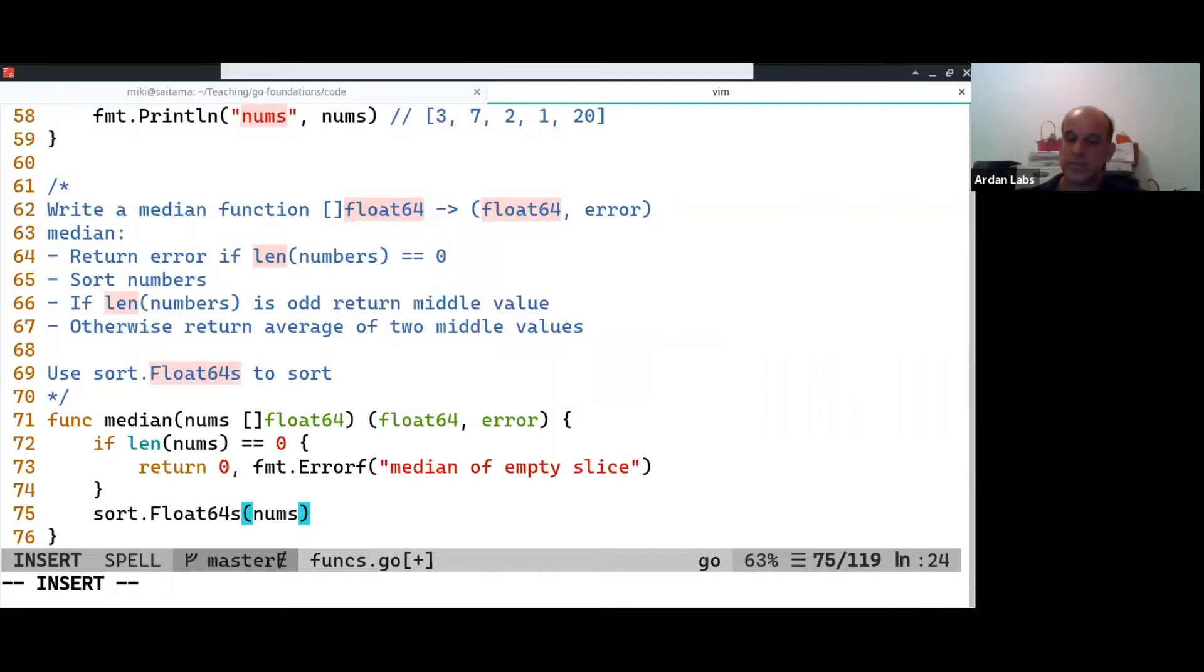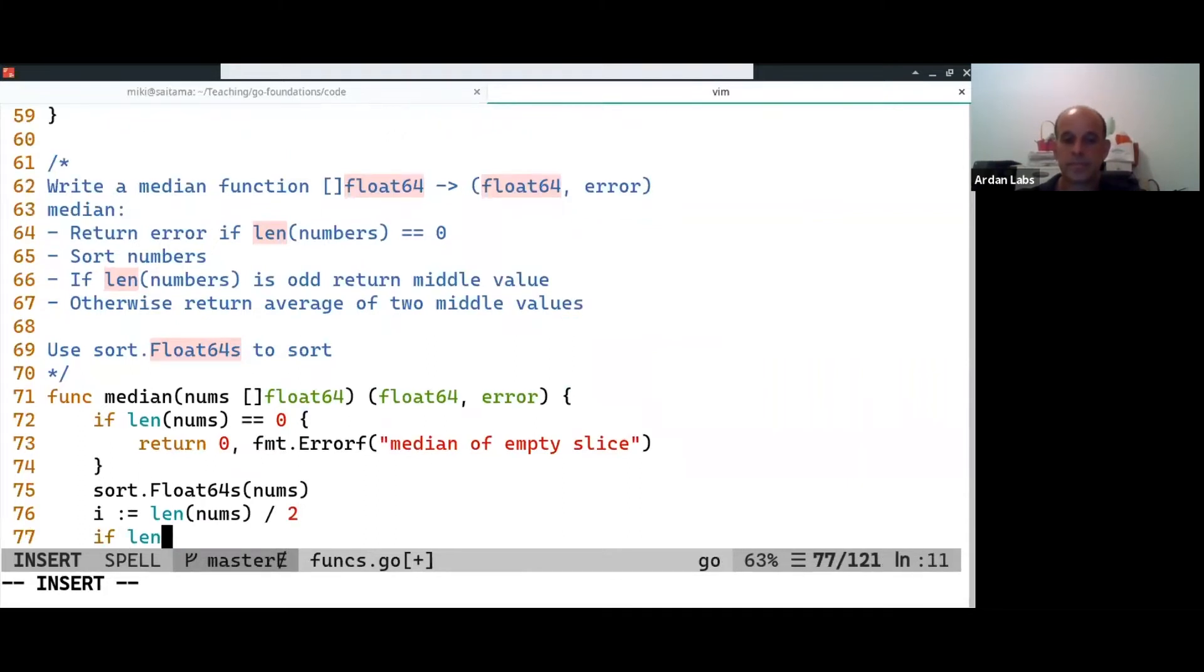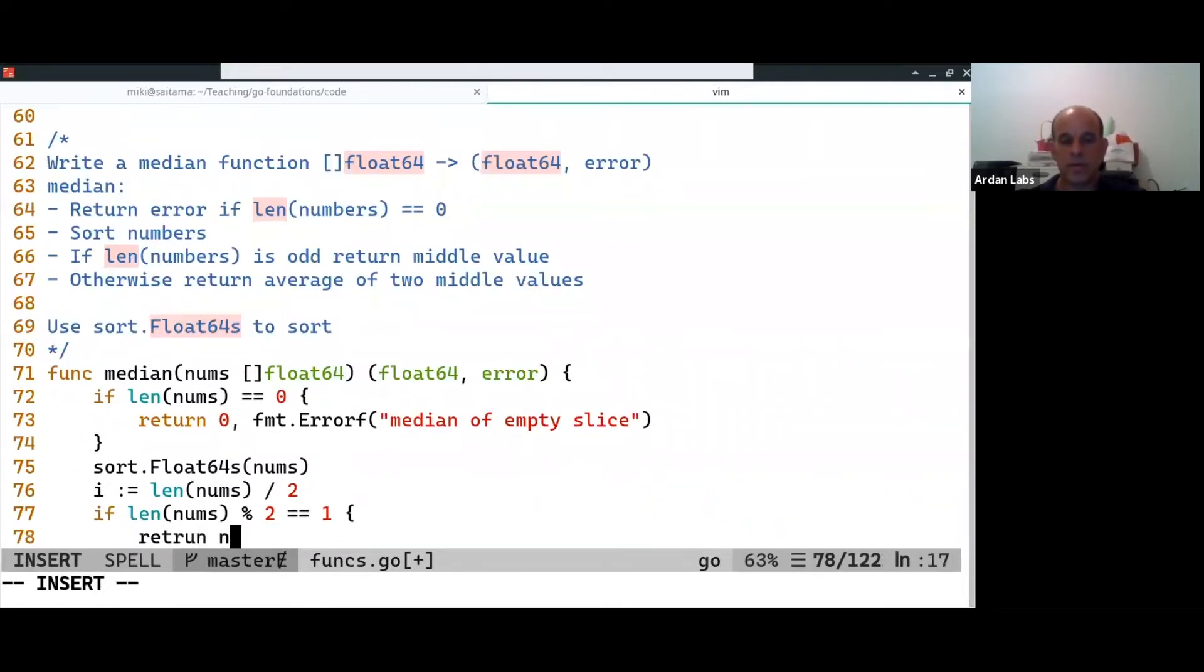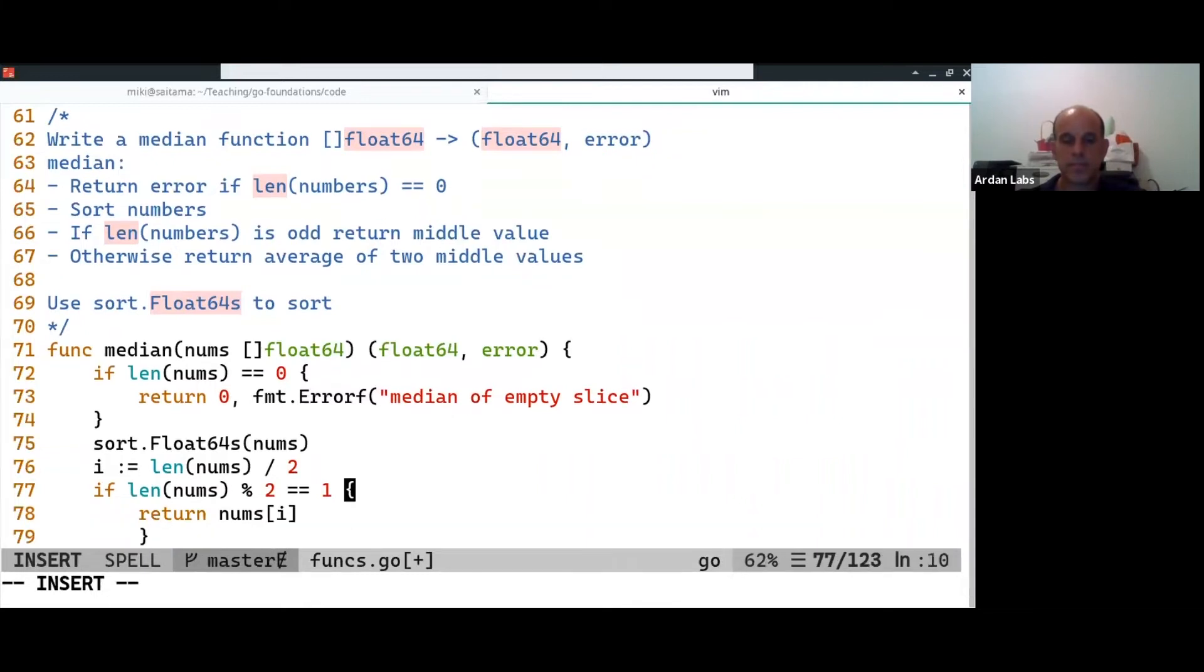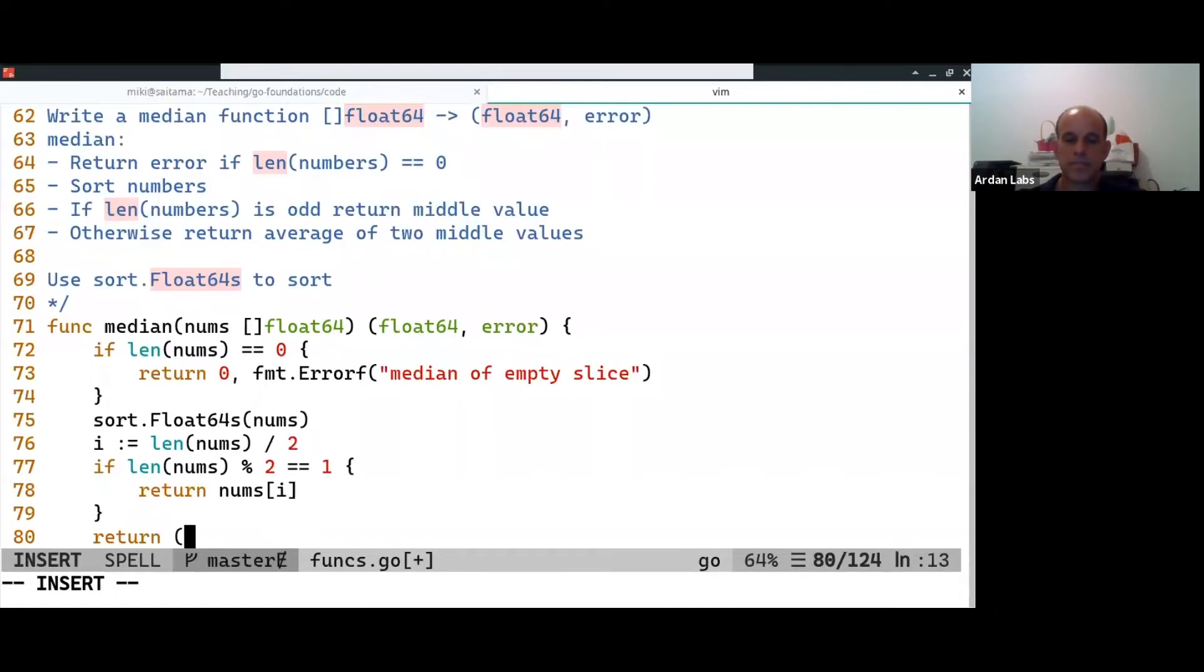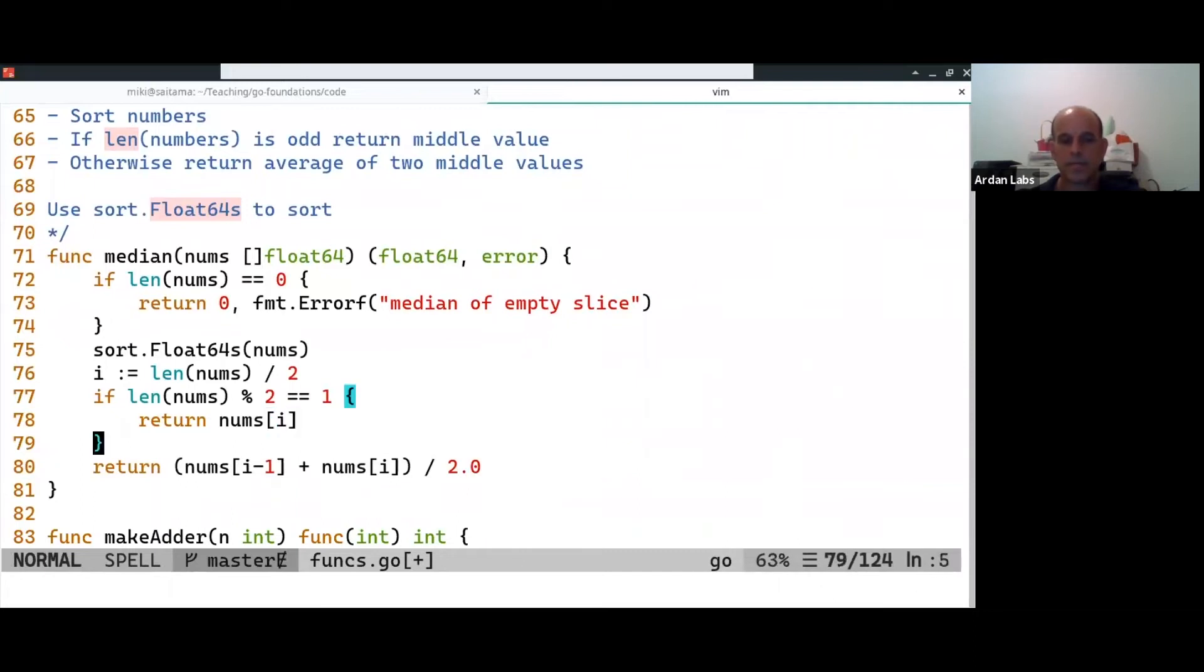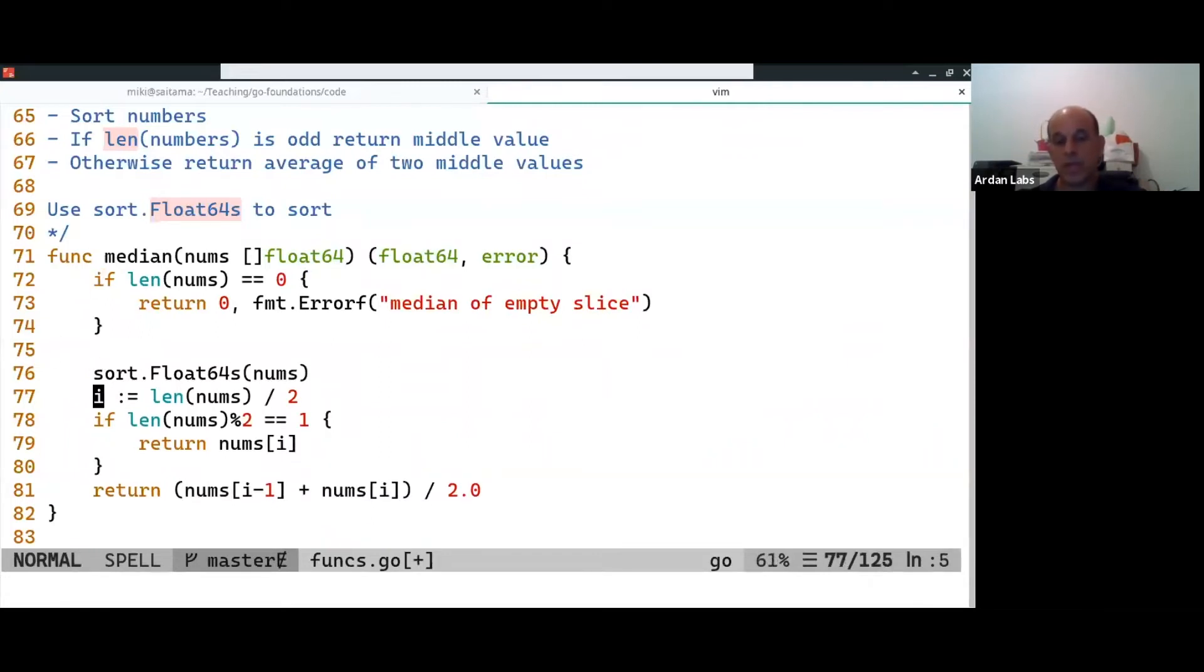So we're going to sort the numbers. So if it's odd, we're going to return... We can do this, right? So the numbers, we take the middle, if it's an odd number, we just take the middle value. Otherwise we take the average between the two middle values.